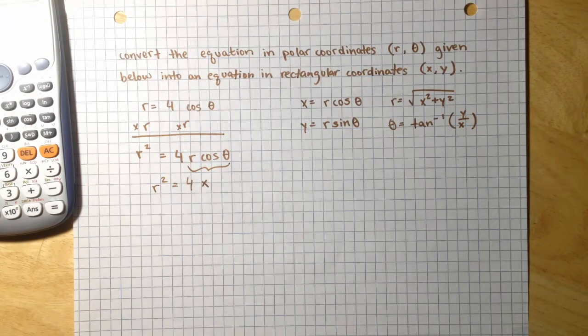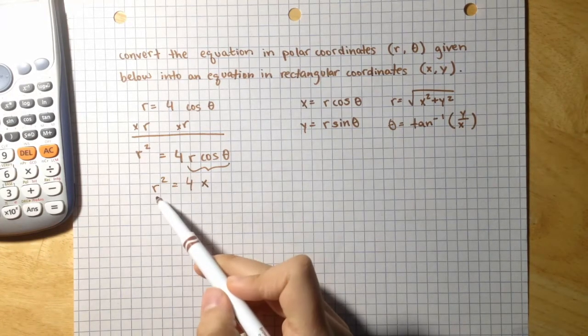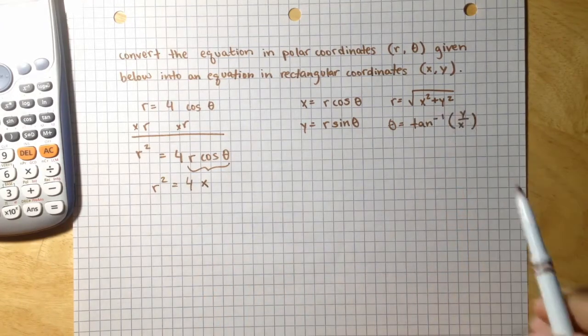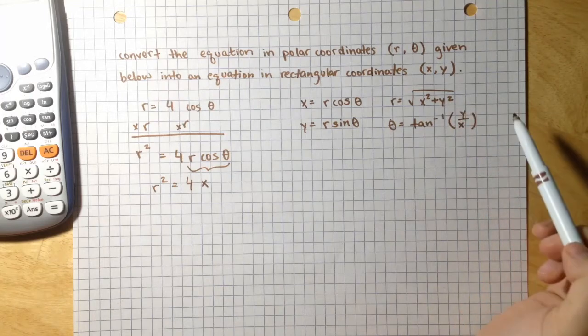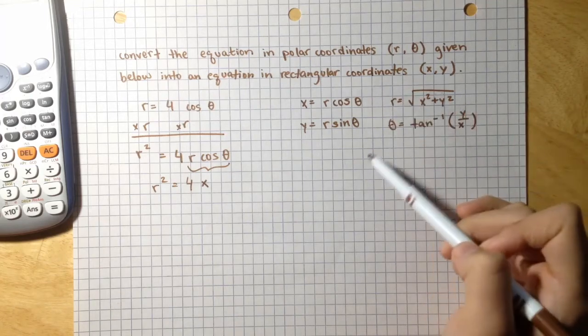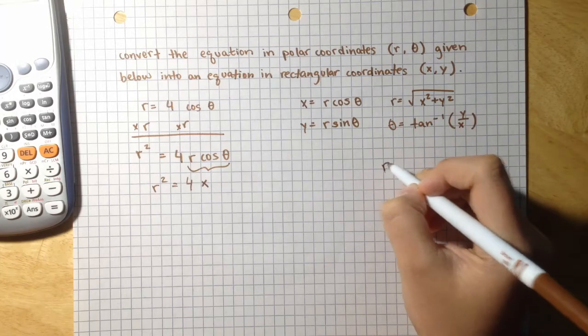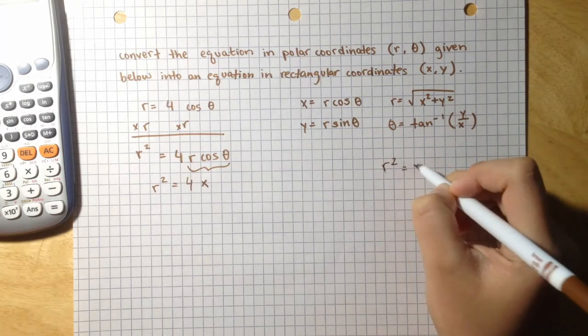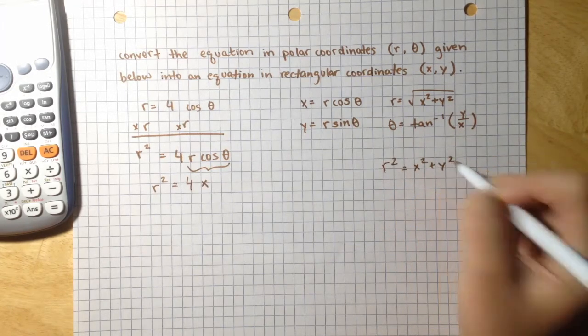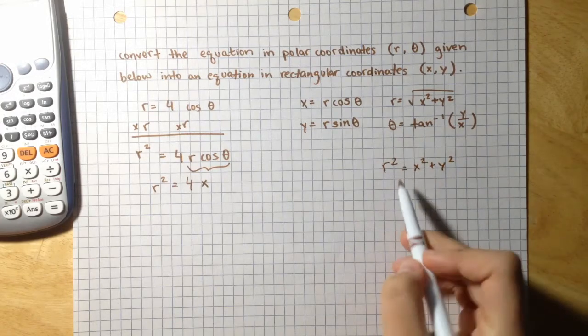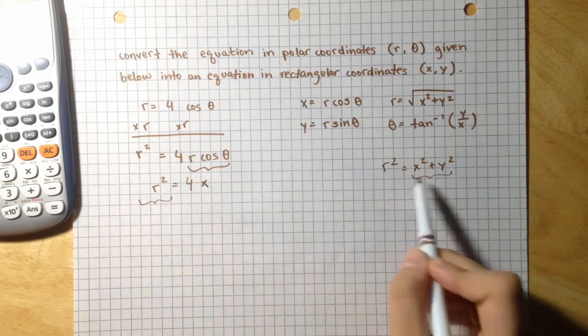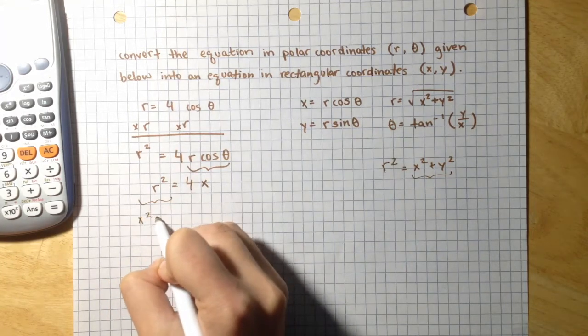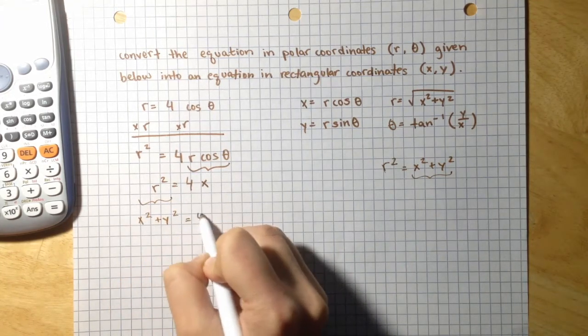Another thing we can notice here is that r squared is actually equal to x squared plus y squared, because if r equals the square root of x squared plus y squared, and we square both sides, we get r squared equaling x squared plus y squared. So we can substitute this with this. x squared plus y squared equals 4x.